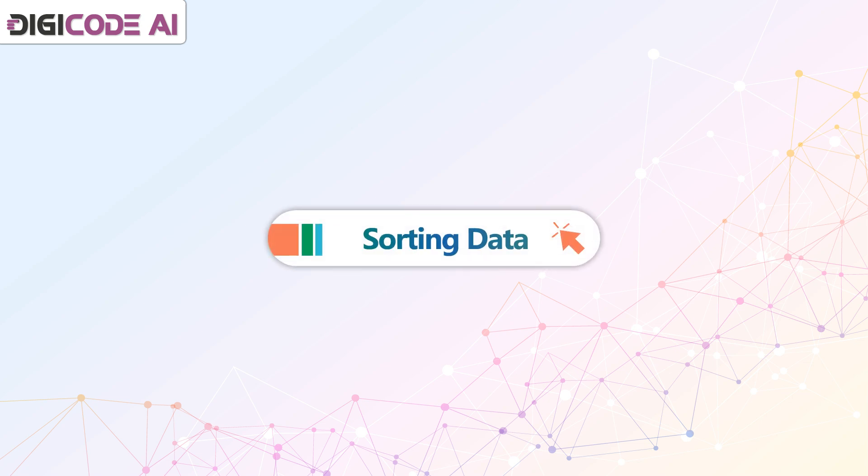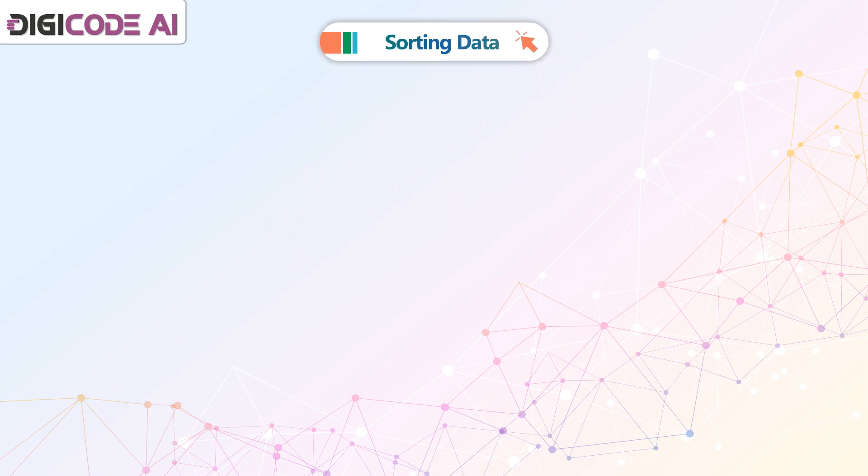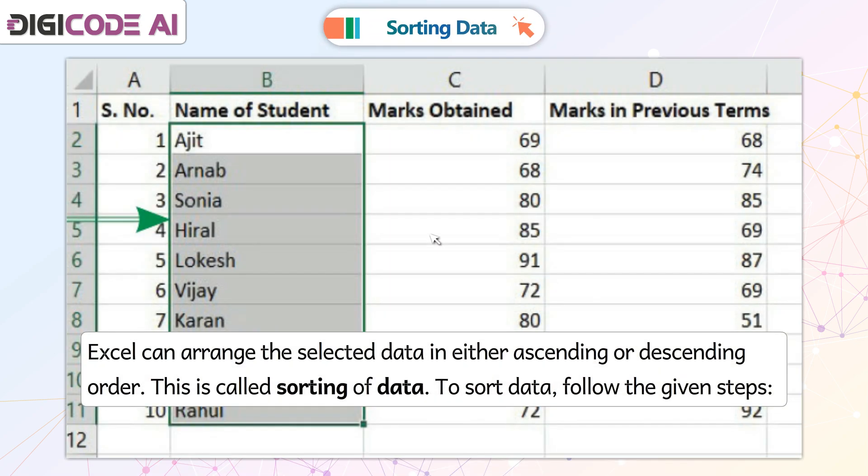Sorting Data. Excel can arrange the selected data in either ascending or descending order. This is called sorting of data.